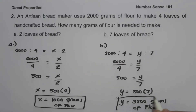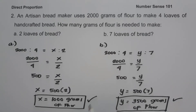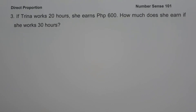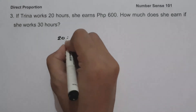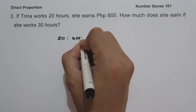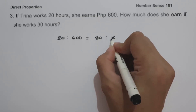So this will be the number of grams of flour needed for 7 loaves of bread, and this will be our answer. On example number 3, if Trina works 20 hours, she earns 600 pesos. How much does she earn if she works 30 hours? To determine how much she earns if she works 30 hours, let us write the given ratio as 20 hours is to 600 pesos equals 30 hours is to X.